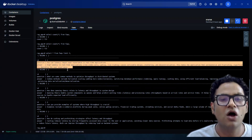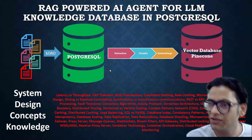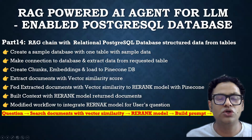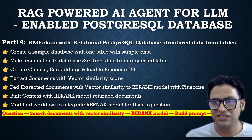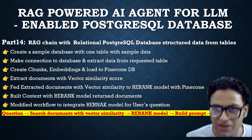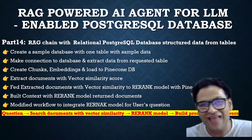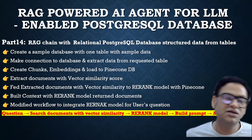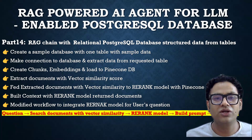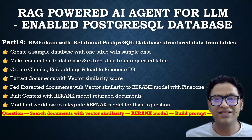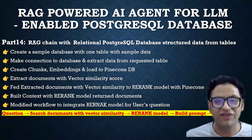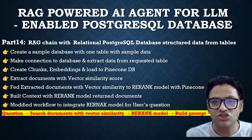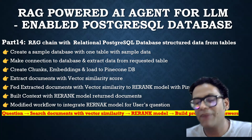We understood how to load that data in the previous part. In today's part, we are going to integrate this data — basically extract what we have in PostgreSQL. The flow is: first make the connection to the DB, extract the data, create a chunk, create an embedding, and load it into the Pinecone vector DB.